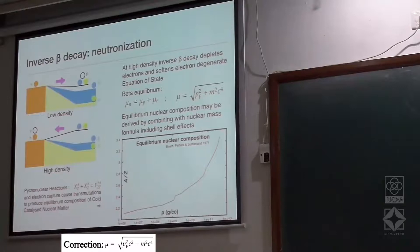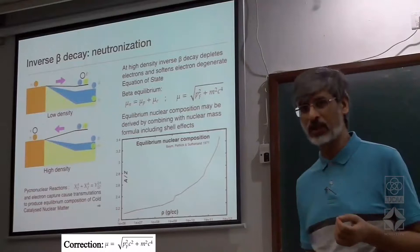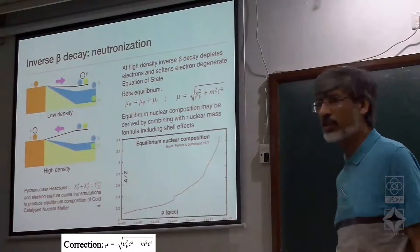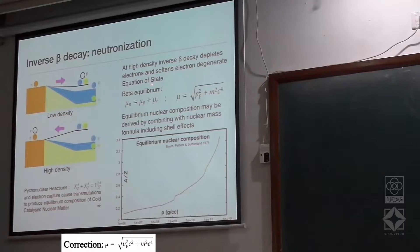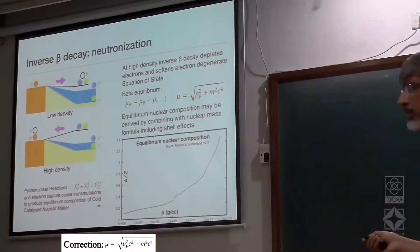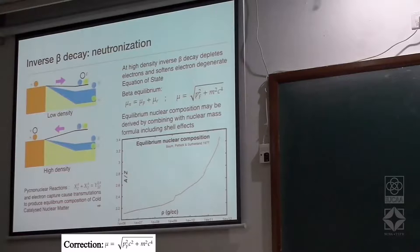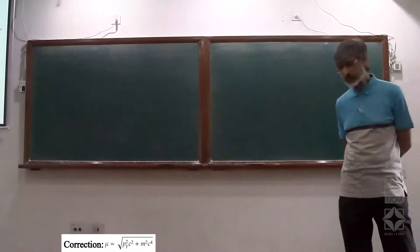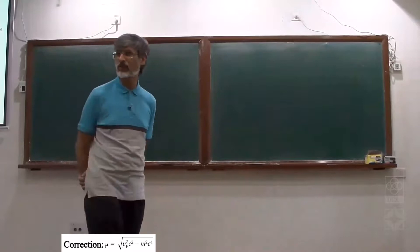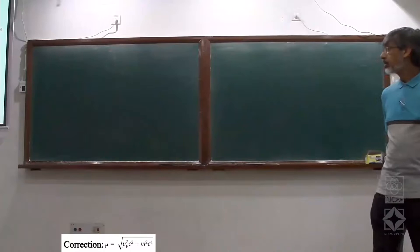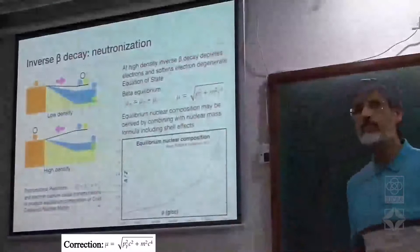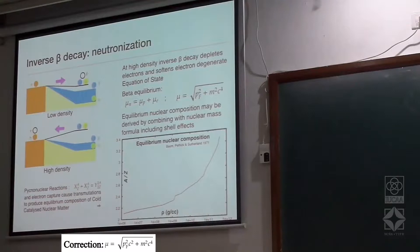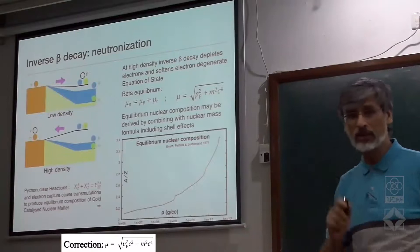The beta equilibrium condition is stated as: mu_n equals mu_p plus mu_e, where mu is defined as the full relativistic sqrt(p_F^2 + m^2 c^4). When people define mu_n and mu_p through non-relativistic expressions using only p_F, they must add a term m_n minus m_p times c squared. If you define the full relativistic expression, the equation as stated is correct. In addition to neutrons, protons, and electrons, muons will also appear at higher densities and can be included in the computation.